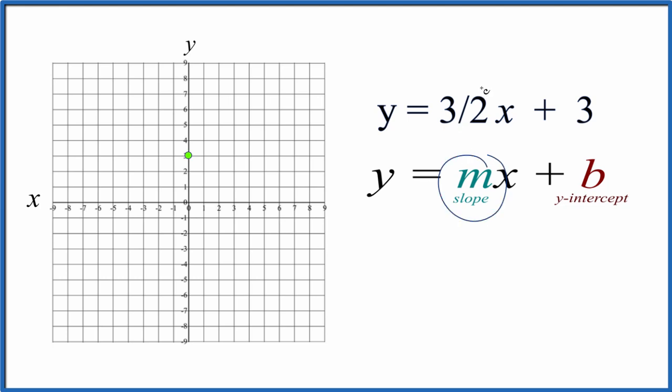Next, we have the slope, and that is three over two. We can think of this as rise over run. So what we'll do is rise one, two, three, and then run one, two.